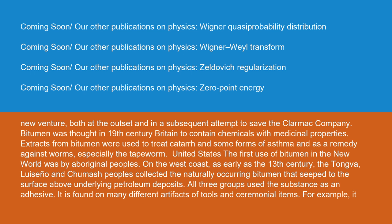Bitumen was thought in 19th-century Britain to contain chemicals with medicinal properties. Extracts from bitumen were used to treat catarrh and some forms of asthma, and as a remedy against worms, especially the tapeworm.